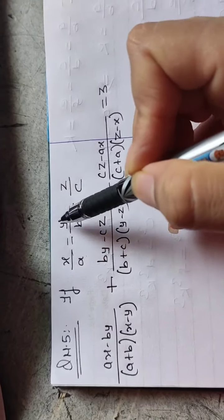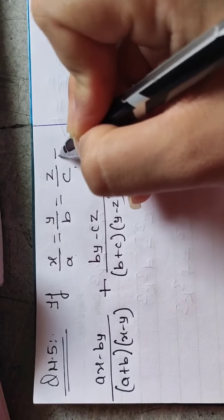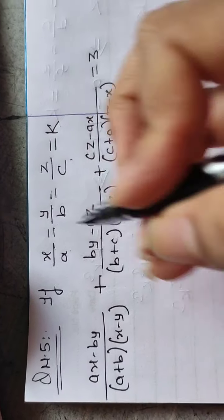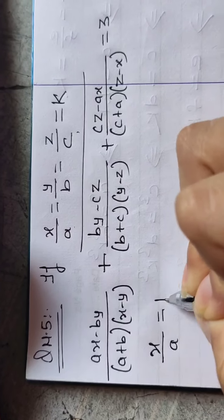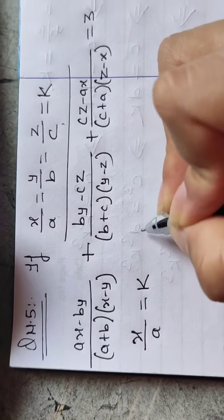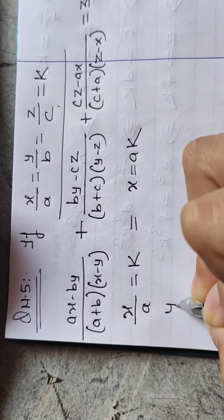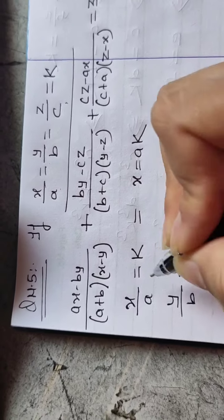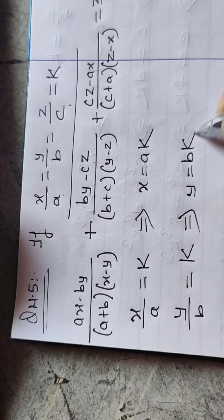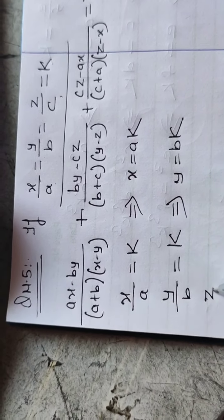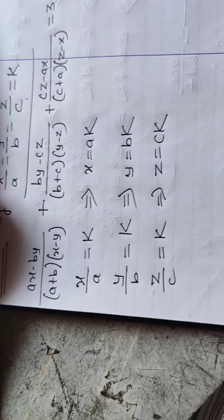If X upon A equals to Y upon B equals to Z upon C, then by the K method you will assume K. From this you can write X upon A equals to K, which gives X equals to AK. Similarly, Y upon B equals to K gives Y equals to BK. And Z upon C equals to K gives Z equals to CK.